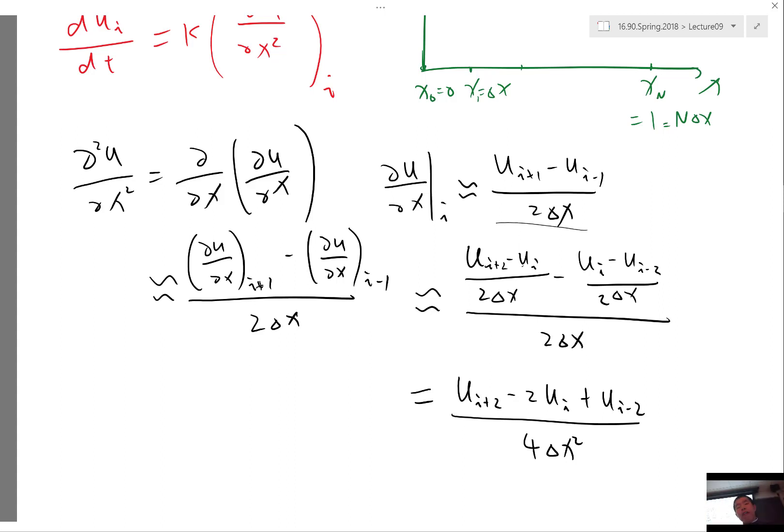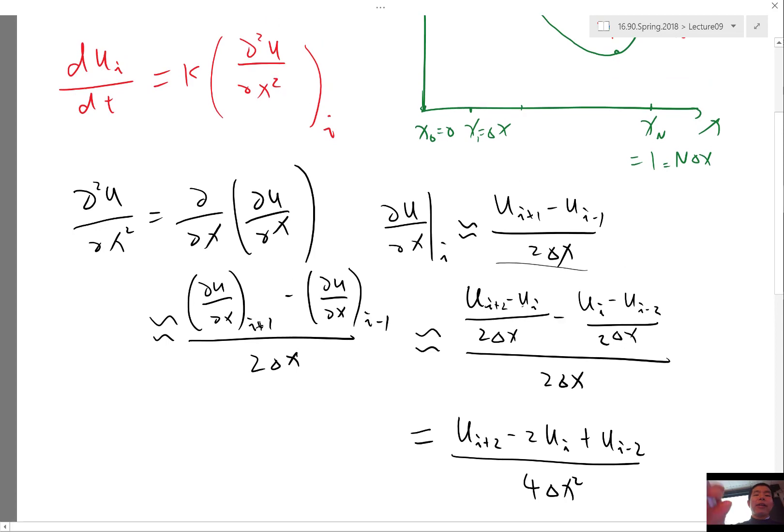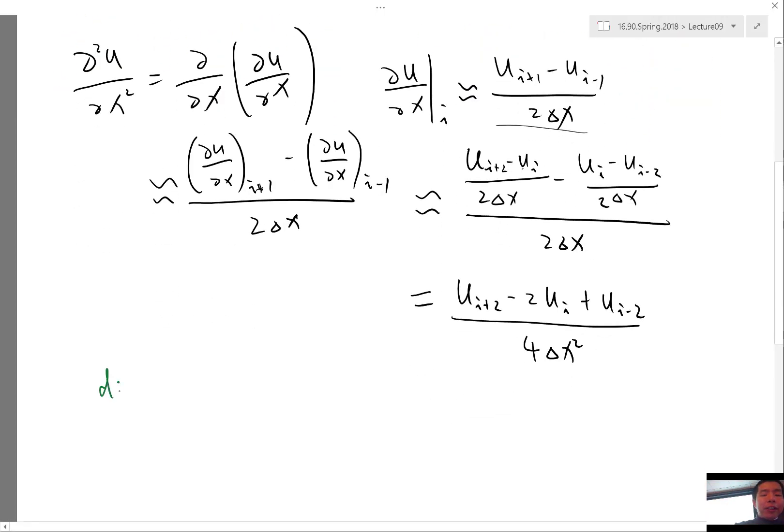Alright so now if we put this into a matrix what does it look like? So again we want to say I have my du dt of u0, u1, etc to un minus 1. Let's again use periodic boundary conditions.